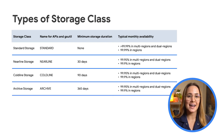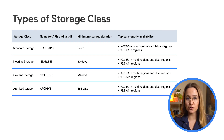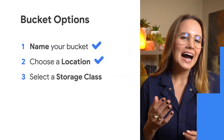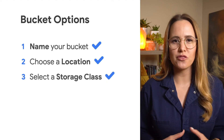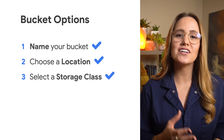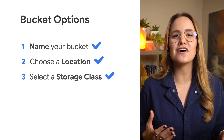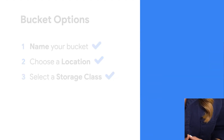Data that will be infrequently accessed and can tolerate a slightly lower availability should be stored using the nearline, coldline, or archive storage classes. Your choices here are going to vary depending on your specific needs. I like to think about using nearline for something I'll access once a month or so, archive for something I'll need about once a year, and coldline for the stuff in between. The documentation will help you make the best choice here.